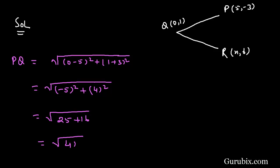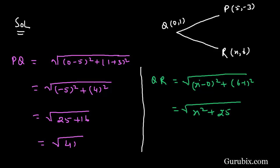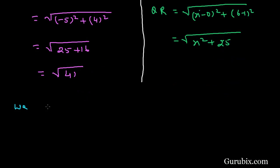Now we shall find the distance between points Q and R using the distance formula. QR = √((x - 0)² + (6 - 1)²) = √(x² + 5²) = √(x² + 25).